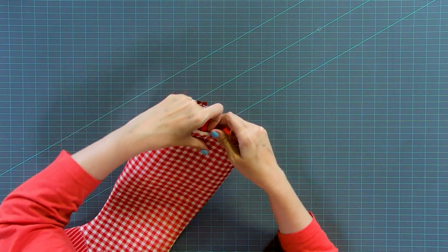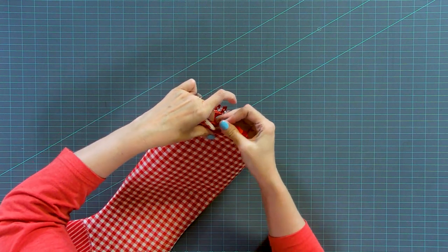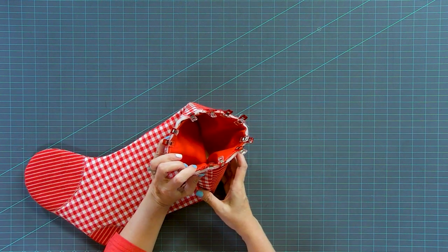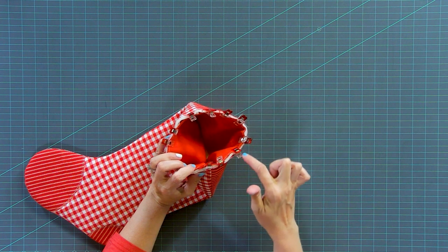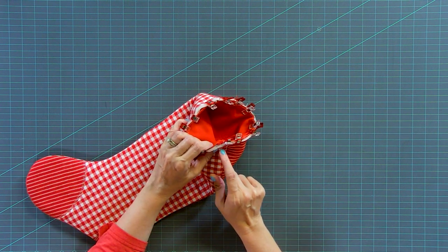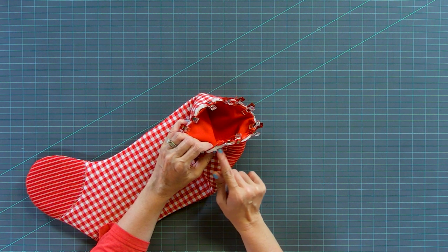And then we're going to just wonder clip all the way around the top, making sure all the fabric is together and you've created a circle. Now, what we're gonna do is stitch all the way around the edge and we're gonna start where the hanger is. And then when we get back around the edge, just sew over your previous stitches about half an inch.